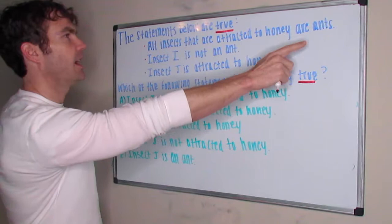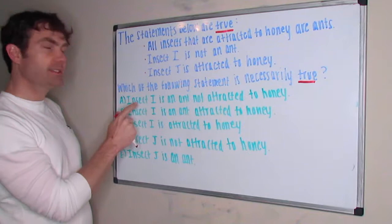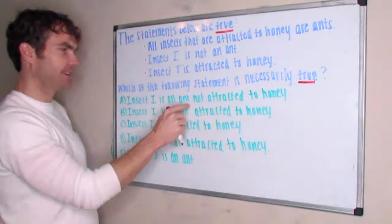But let's evaluate each answer choice. Insect I is an ant—well, stop there. Insect I is NOT an ant, so anything that says insect I is an ant is wrong. That rules out both A and B.